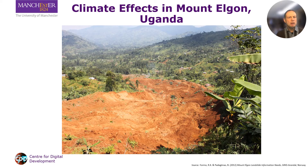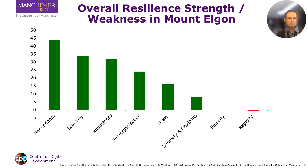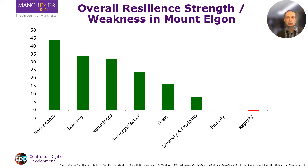In step one, we undertook interviews with community members in order to benchmark general resilience. The results are shown here. Rapidity is the highest priority for intervention as that is the weakest. Redundancy is the lowest priority as that is the strongest.